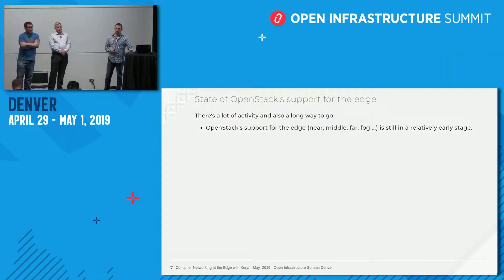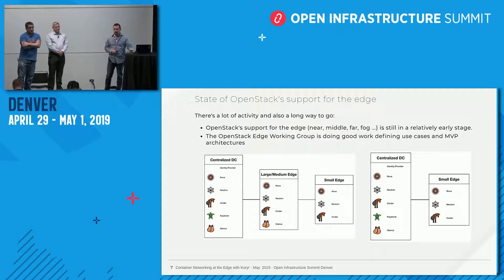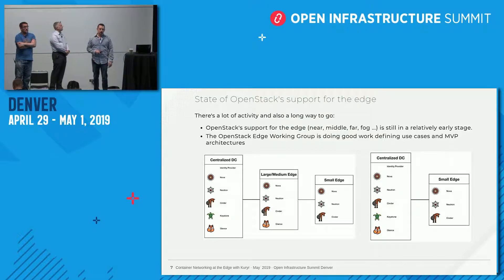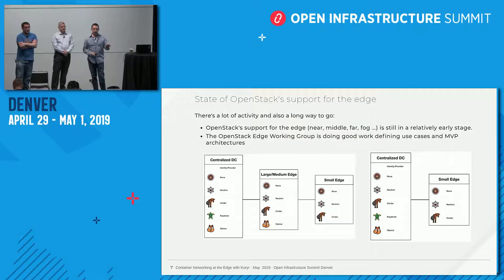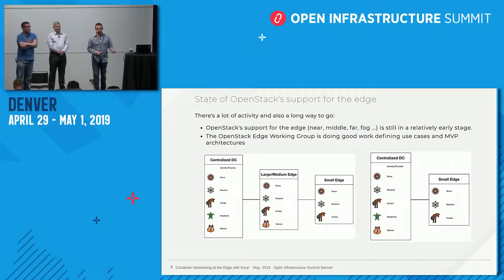There's a lot of activity inside OpenStack at the edge, in particular the edge computing working group. They have two MVPs being looked at: one is a distributed control plane with a centralized data center, with some synchronized services like Keystone, and then a small edge running just compute and Neutron.